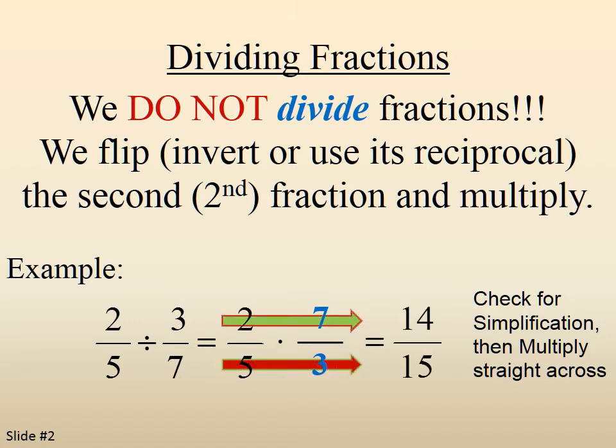We check for simplification. There isn't any, and then we multiply straight across. So two times seven becomes fourteen. Five times three becomes fifteen. So two-fifths divided by three-sevenths becomes fourteen-fifteenths.